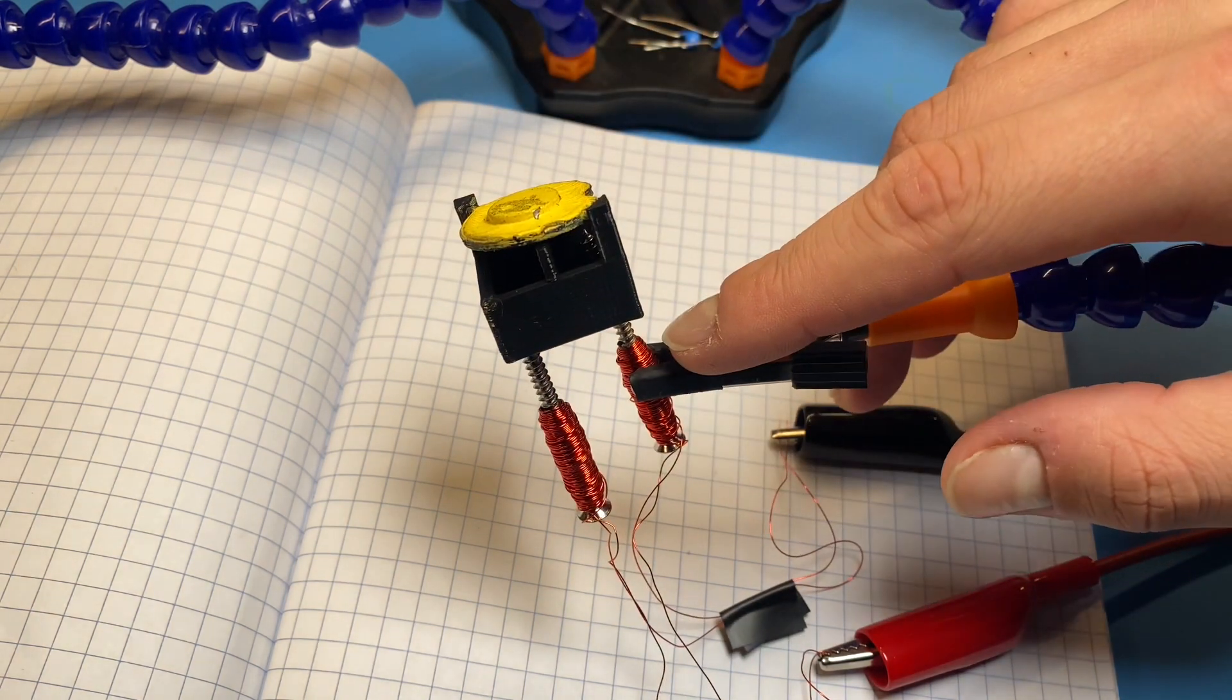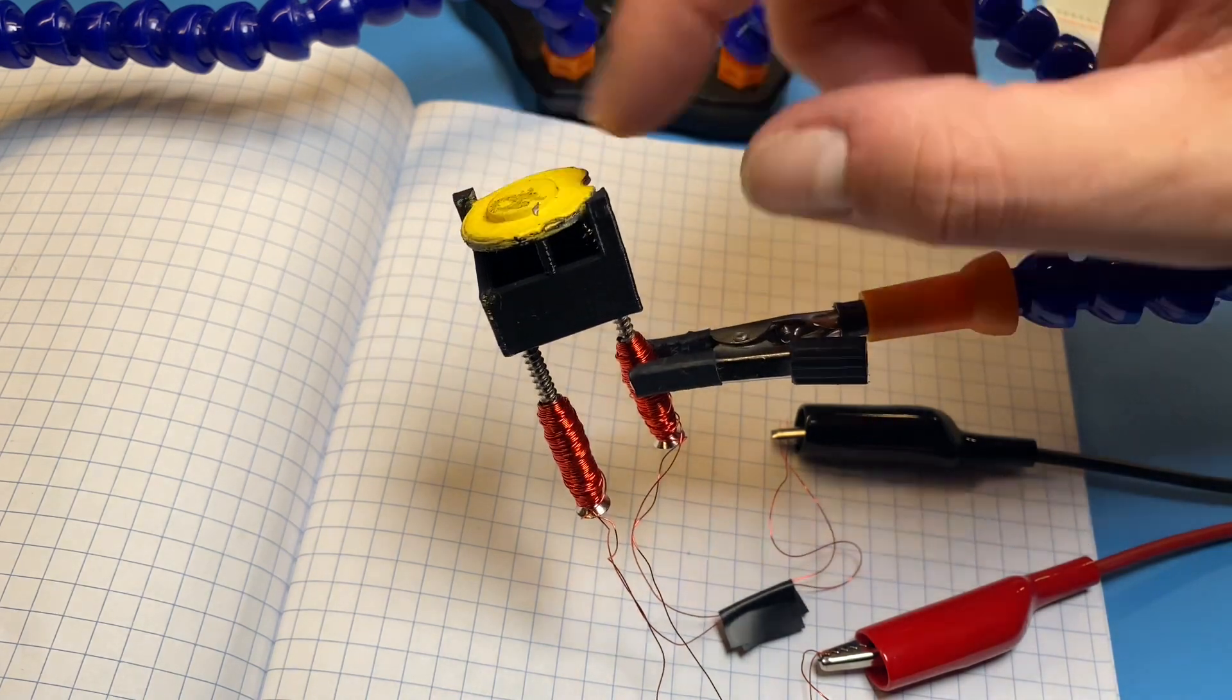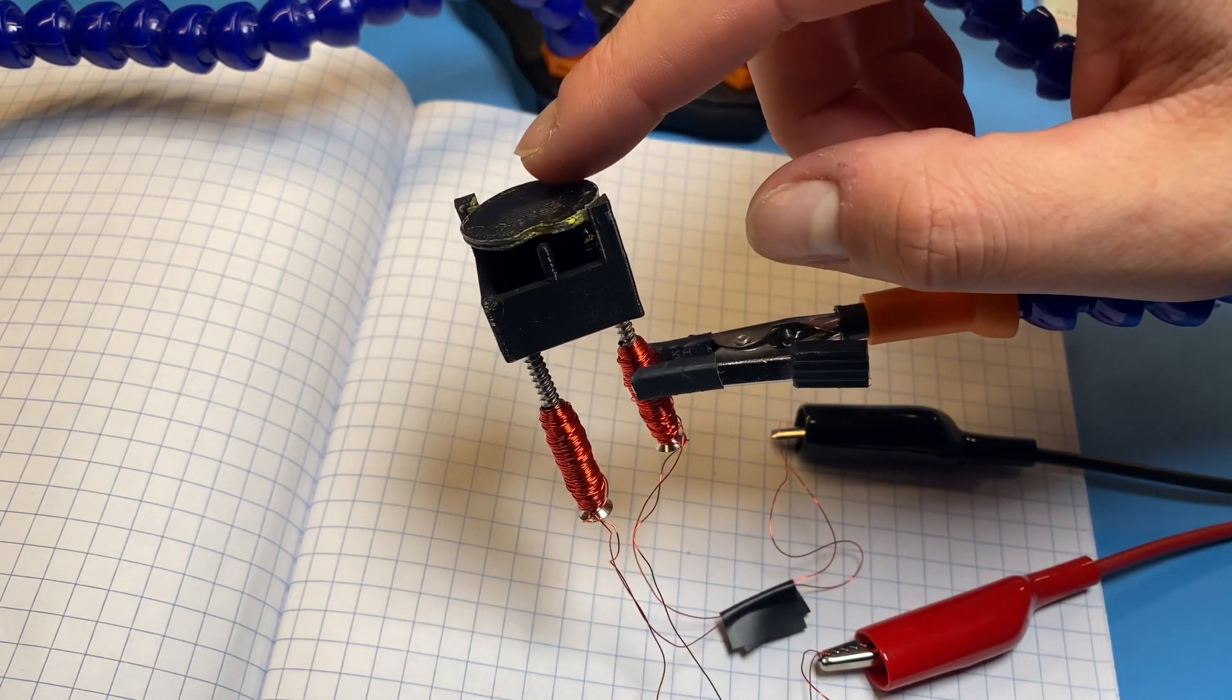Depending on the direction of current flowing through each of the electromagnets, the dot will flip up, or if we reverse that, it'll flip the other way.